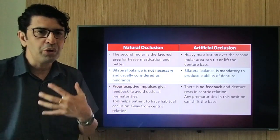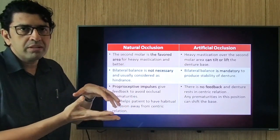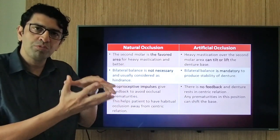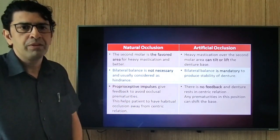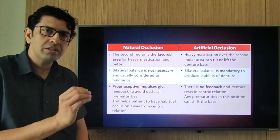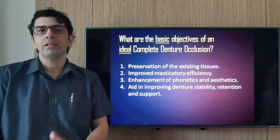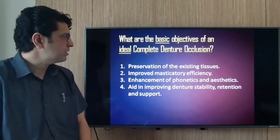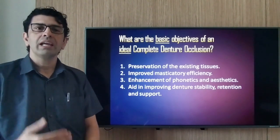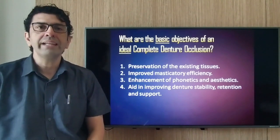Without proprioceptive feedback, the patient cannot avoid occlusal prematurities, which can result in a shifting of the denture base. The basic objectives of an ideal complete denture occlusion are: preserve existing tissue, improve masticatory efficiency, enhance phonetics and aesthetics, and aid in improving denture retention, stability, and support.